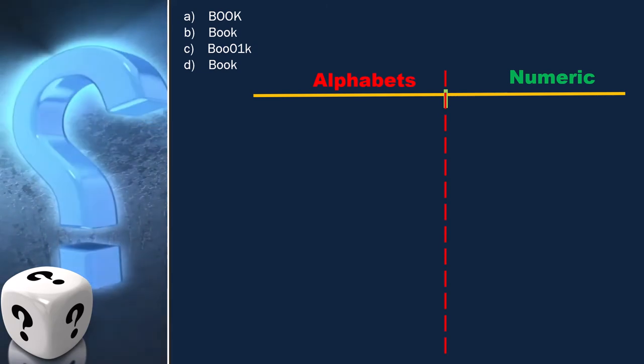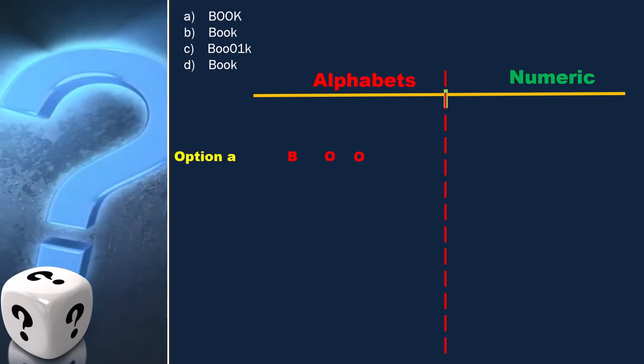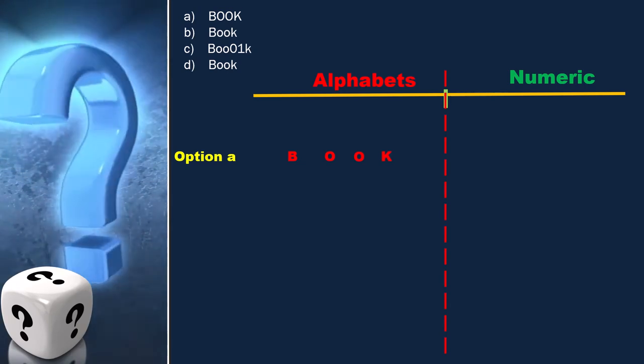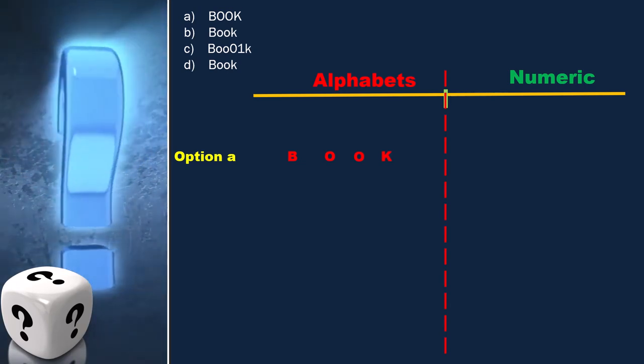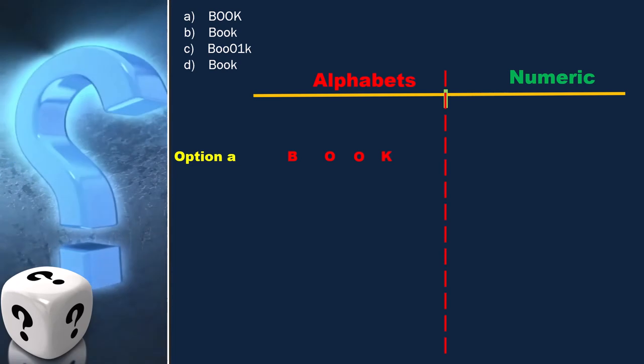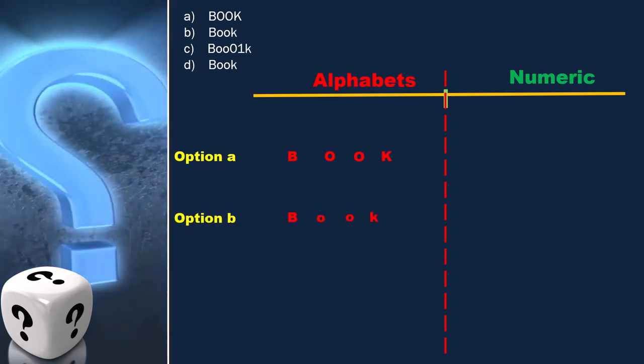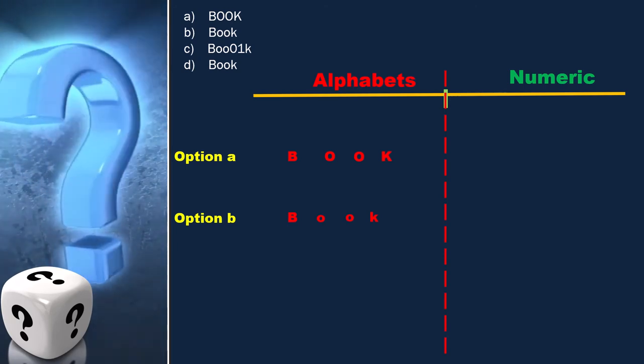Now let's look into the first option, and we can put it here. Here, all the letters are capital and it only covers alphabets. Similarly, if we see option B, where B is capital and all other letters are in a small case.